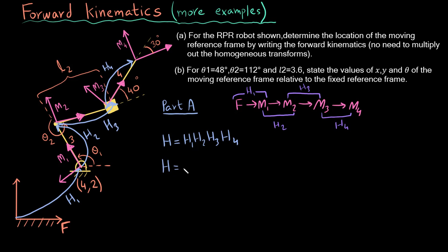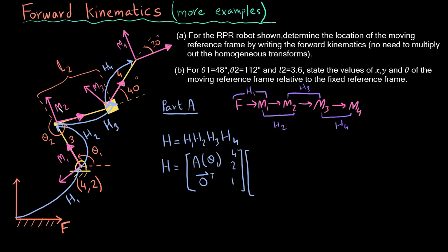Writing it out: H1 is a rotation matrix with angle theta1, zero vector transpose, and displacement of [4, 2, 1]. H2 is the transform from M1 to M2 with rotation theta2, zero transpose, and displacement [3, 0, 1].